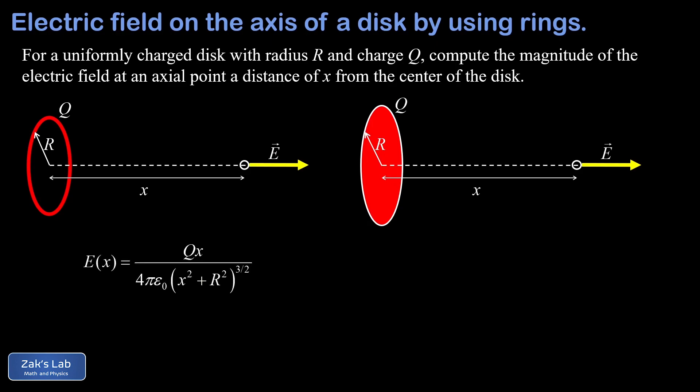As a quick reminder, the electric field on the axis of a uniformly charged ring is given by qx over 4πε₀ times the quantity x² plus R² to the 3/2 power, where x is the distance from the center of the ring, q is the charge on the ring, and R is the radius of the ring. I'll post a link at the top to the video where that was derived.